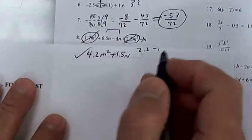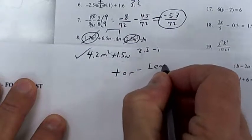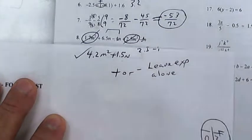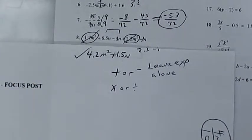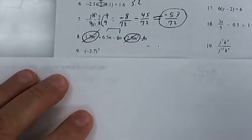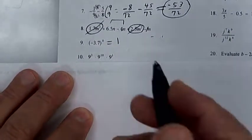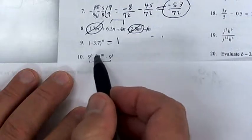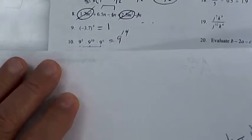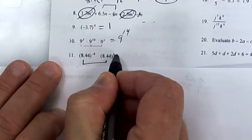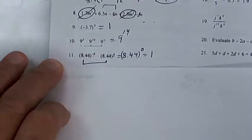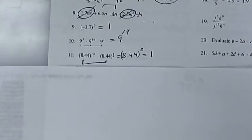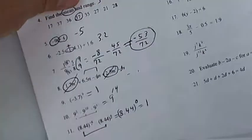When you add or subtract, leave the exponents alone — don't do anything with them. It's only when you multiply or divide that you do something with exponents. Anything to the zero power equals one. You have the same base so add the exponents: 9 to the 14th power.